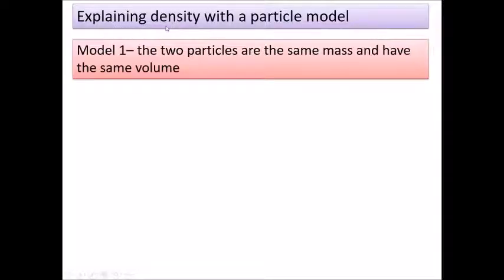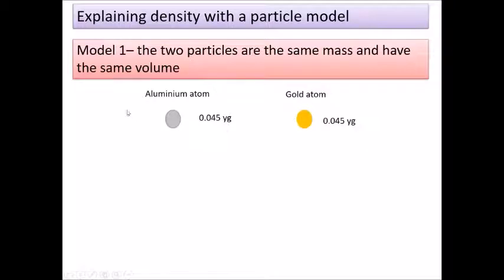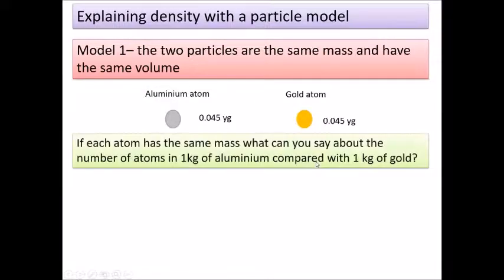You might wonder why gold is more dense than aluminium. We need a particle model to explain this. Here's one suggestion: maybe gold and aluminium particles have the same mass and the same volume. In a key stage 3 model, you tend to draw particles all the same size — same mass for both atoms. Would that explain the different densities?